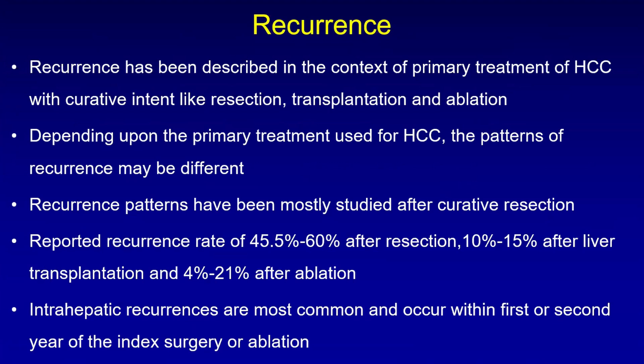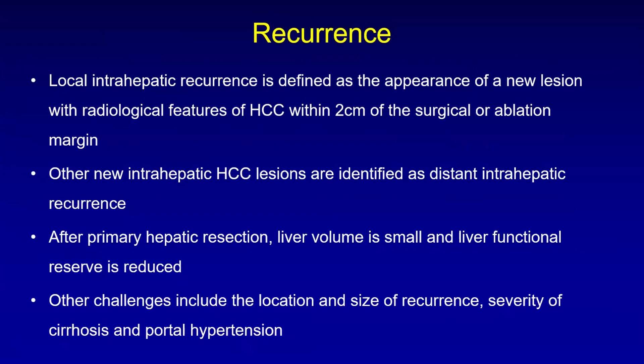Recurrence has been described in the context of primary treatment of HCC with curative intent like resection, transplantation, and ablation. Depending upon the primary treatment used, the patterns of recurrence may be different, and most of these have been studied after curative resection. The reported recurrence rate after resection is 45.5–60%, after liver transplantation is 10–15%, and after ablation is 4–21%. Intrahepatic recurrences are most common and occur within the first or second year of the index surgery or ablation. Local intrahepatic recurrence is defined as the appearance of a new lesion with radiological features of HCC within 2 cm of the surgical or ablation margin.